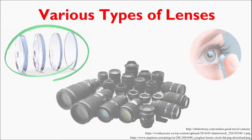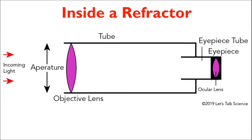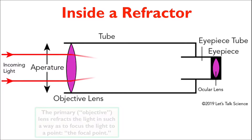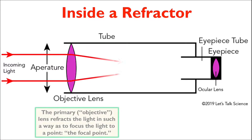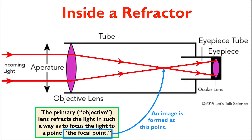Let's take a look inside the body of a refracting telescope to see how it interacts with incoming light. As light enters the tube of a refractor, it is bent by the primary or objective lens, causing it to converge at a particular point before fanning out again as it travels to the ocular lens where you'll put your eye. The point where the light rays converge together is the focal point of the telescope — this is where an image forms.